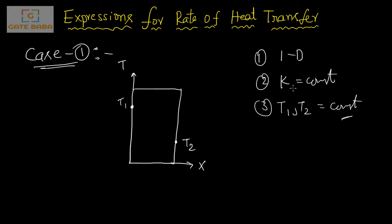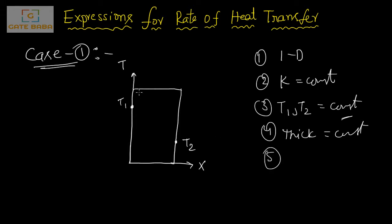The third assumption is that T1 and T2 are constants and not changing with time — so it is a steady-state, one-dimensional problem with constant thermal conductivity and constant temperatures. The fourth assumption is that the thickness x is constant, and the fifth is that the cross-sectional area A is constant — whatever the area at one side, it is the same at any section.